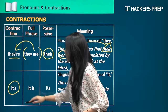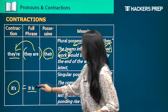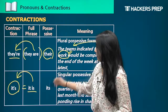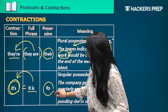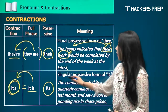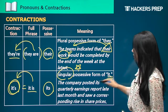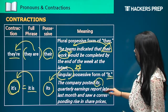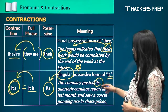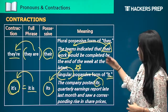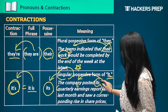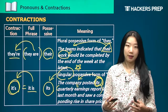What about 'it's'? 'It apostrophe s' originally equals 'it is,' combined with an apostrophe into one word. The possessive form is 'its' — no apostrophe, just I-T-S — and it is singular. For example: 'The company posted its quarterly earnings report late last month and saw a corresponding rise in share prices.' Here, 'its' refers to the company. The quarterly earnings report belongs to the company, so it's the possessive form, and since company is singular, we use 'its.'